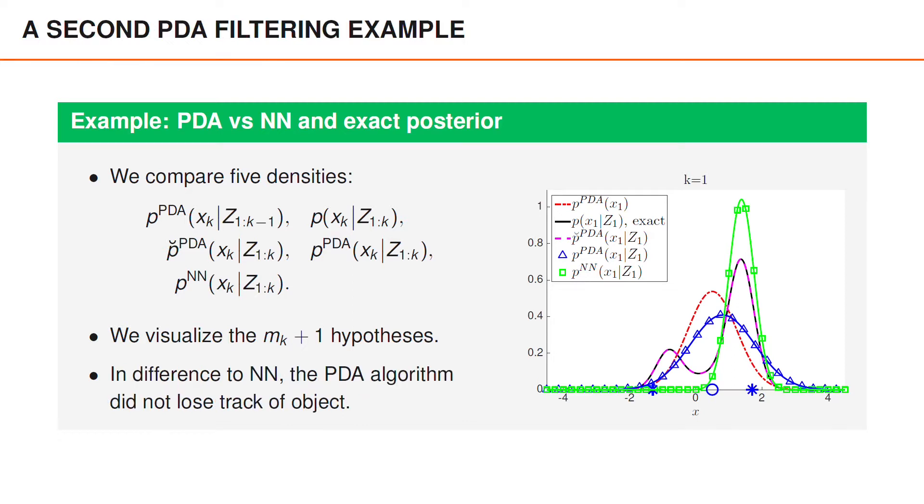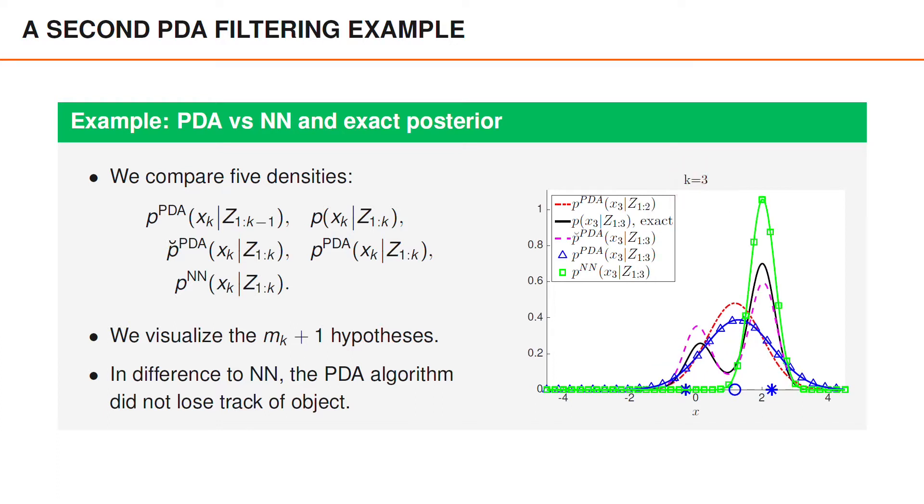Let us proceed to consider the second example where the nearest neighbor algorithm performed more poorly. The first three time steps are identical to the first scenario. At time 3, the nearest neighbor algorithm has underestimated the uncertainties, whereas the PDA posterior is slightly more accurate.